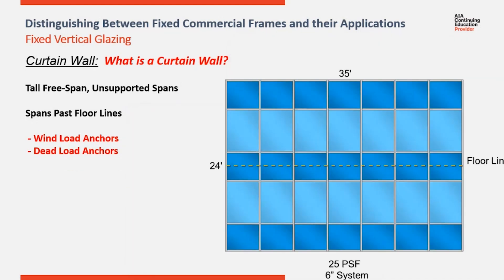Here's an example of an elevation drawing that includes a midpoint anchor supporting the elevation. Because of this, we can use a 6-inch-deep system as opposed to the deeper mullion on the previous elevation.